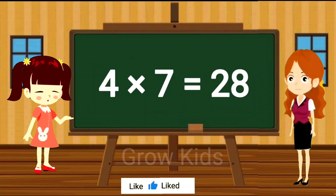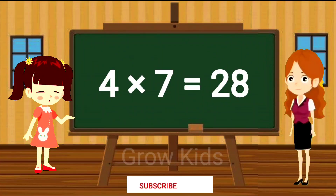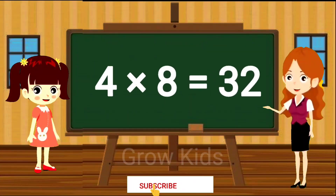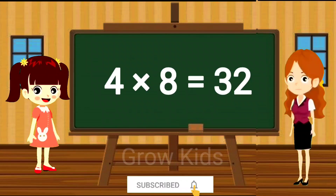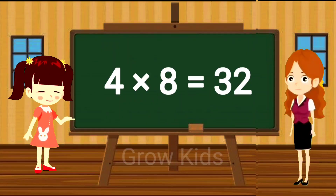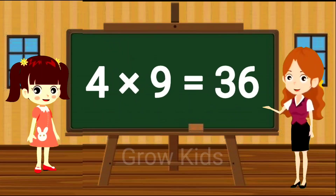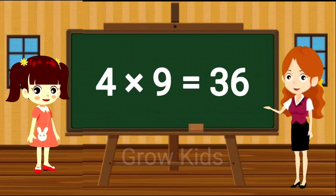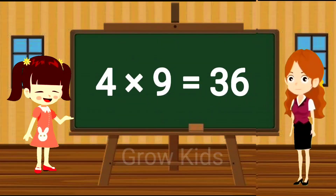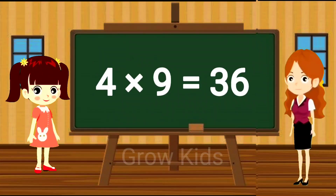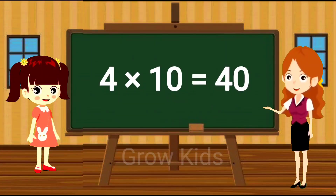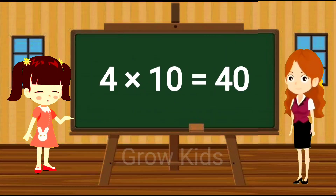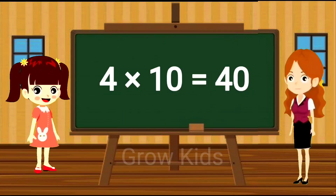Four sevens are twenty-eight. Four eights are thirty-two. Four nines are thirty-six. Four tens are forty.